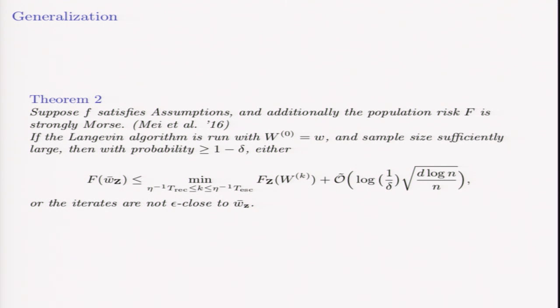Our result is as follows: assume everything we've been assuming, and additionally that the population risk is strongly Morse. Then the population risk of the local minimum is nicely bounded with respect to the minimum attained by the Langevin algorithm over the interval recurrence time through escape time.